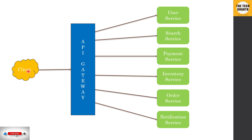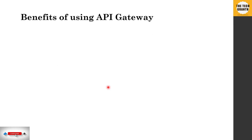The API gateway also supports protocol switching. For example, the client may use a WebSocket connection to the API gateway, but post-gateway all internal connections can be HTTP. Since everything behind the gateway is your own controlled world, any changes made there do not affect the client at all.